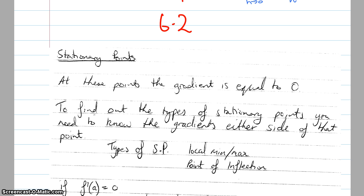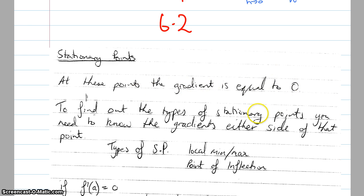To find a stationary point, we know that the gradient at that particular point is equal to zero — that's the key to all of this. In order to find out the nature of the stationary point, we need to know the gradient value either side of the stationary point.